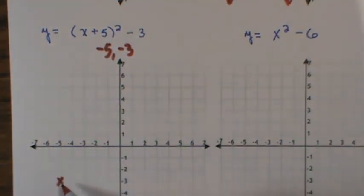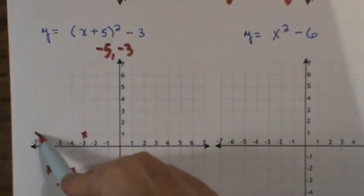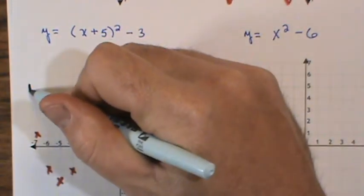Standard movements: right 1, up 1. Left 1, up 1. Right 2, up 1, 2, 3, 4. Left 2, up 4. Ran out of space on my grid. And that's okay. So now I can just connect those dots.